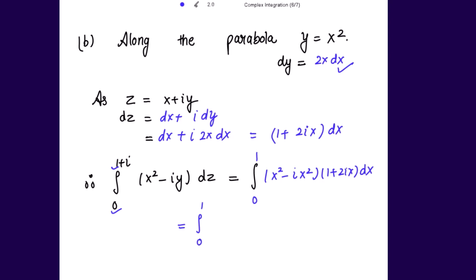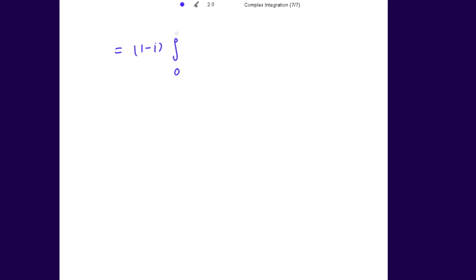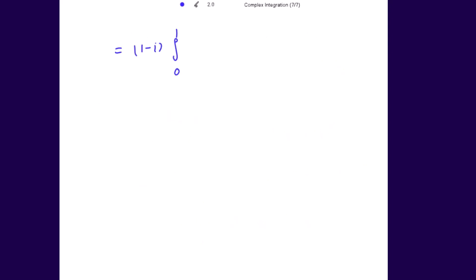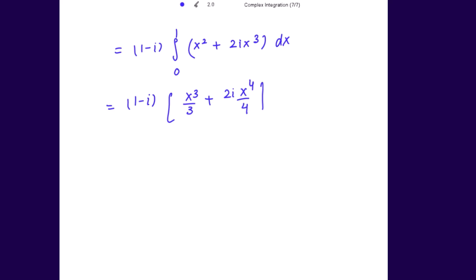So the integral becomes ∫₀¹ (x² - ix²)(1 + 2ix) dx. Taking (1 - i) outside, we multiply x² by (1 + 2ix) to get x² + 2ix³. So we integrate (1 - i)·∫₀¹ (x² + 2ix³) dx, giving (1 - i) · [x³/3 + 2i·x⁴/4] from 0 to 1.